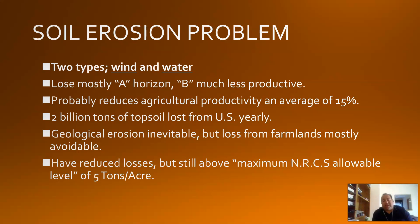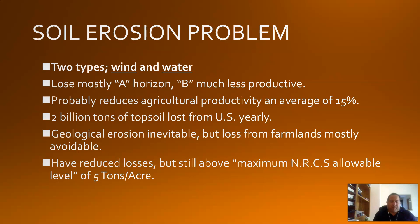You get about 2 billion tons of topsoil lost in the U.S. yearly. In terms of geological erosion, that's erosion that's happened over a long period of time, so that's inevitable. Things like the forming of the Colorado River and the Grand Canyon — that's a good example of geological erosion, just wind and water for millions of years, and then you get that formation.